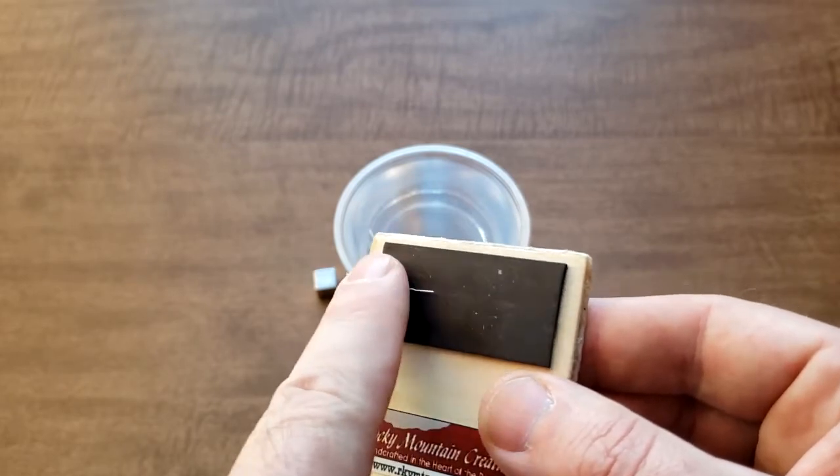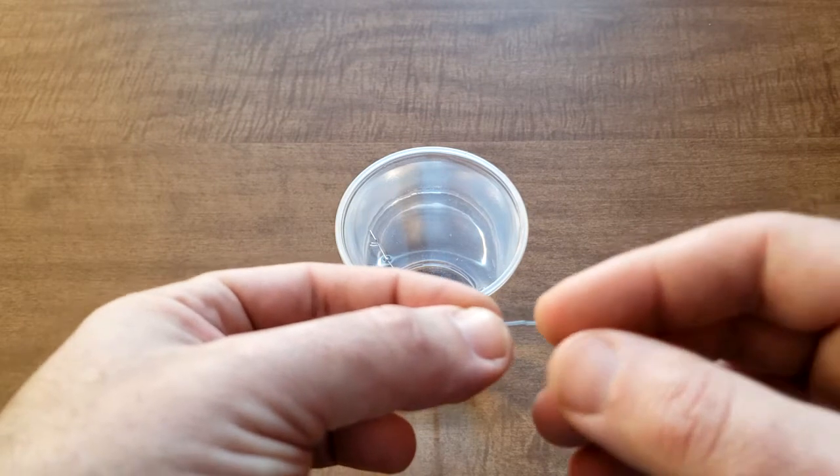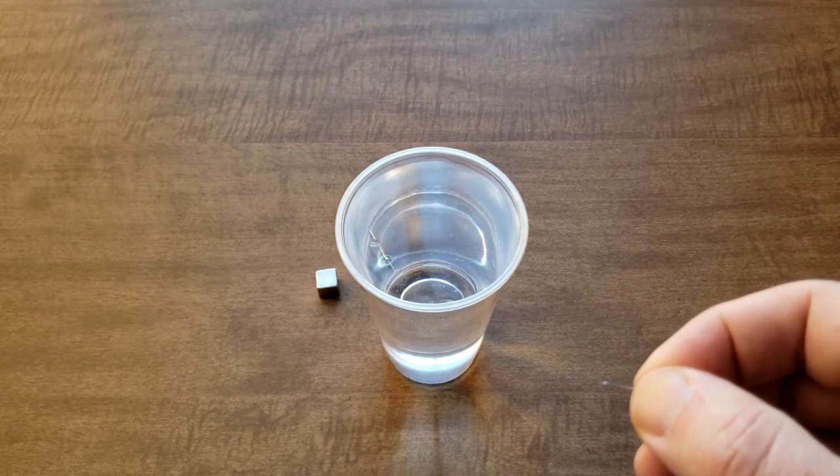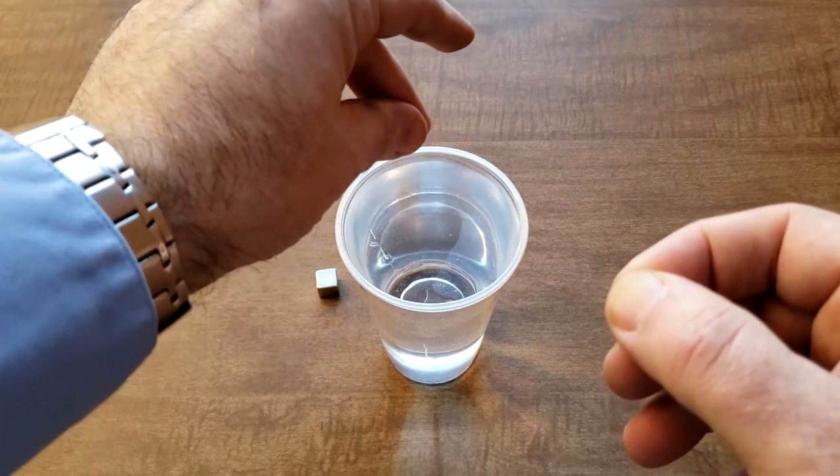And now here's the tricky part. You know that metal would sink right on the water. It's not going to float because metal is heavier than water, or I should say more dense than water. But if I just drop one in, it sinks.